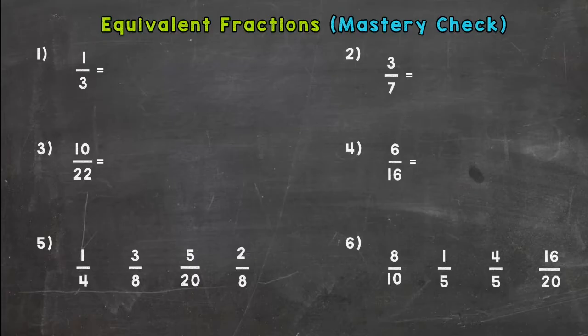So numbers one, two, three, and four, this is just like the instructional video. You need to write two equivalent fractions to each of those, and then for number five and six you pick out the fraction that does not fit with the rest.